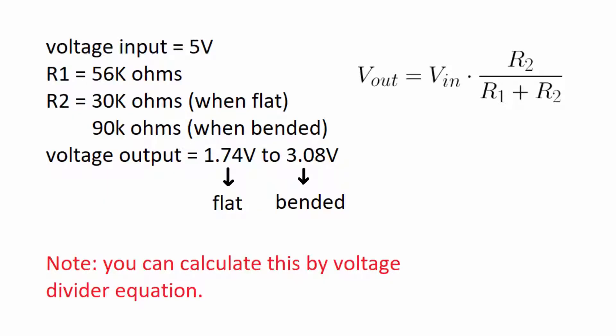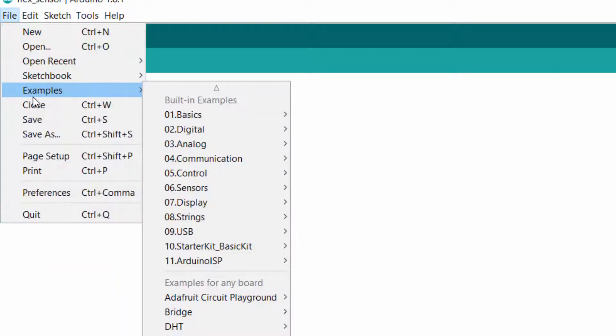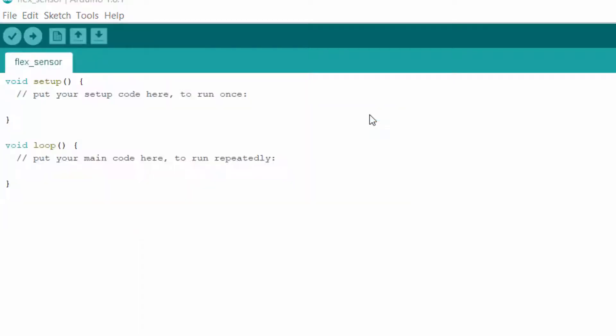We know that it won't give us analog input range 0 to 1023, so we will determine the range of analog input. Go to File, Examples, Basics, Analog Read Serial.